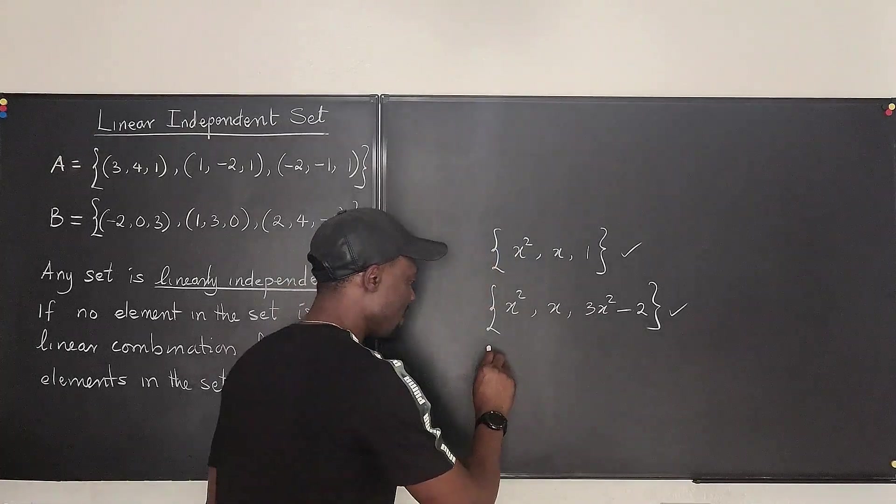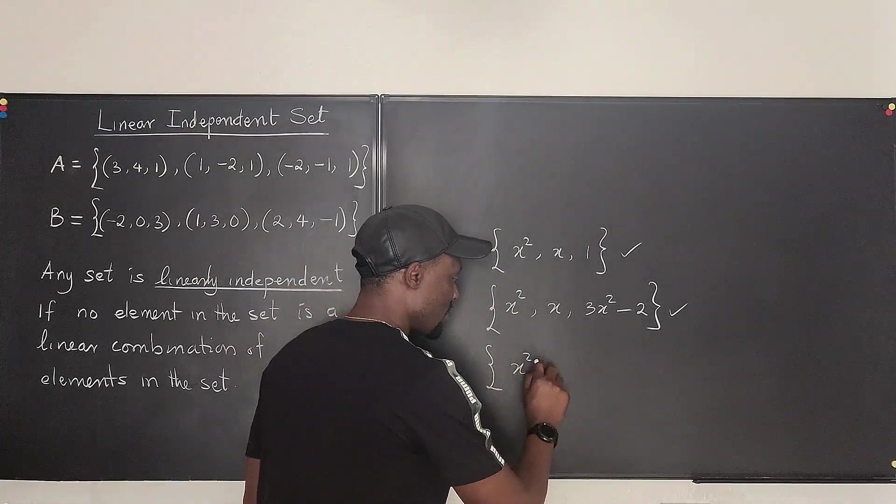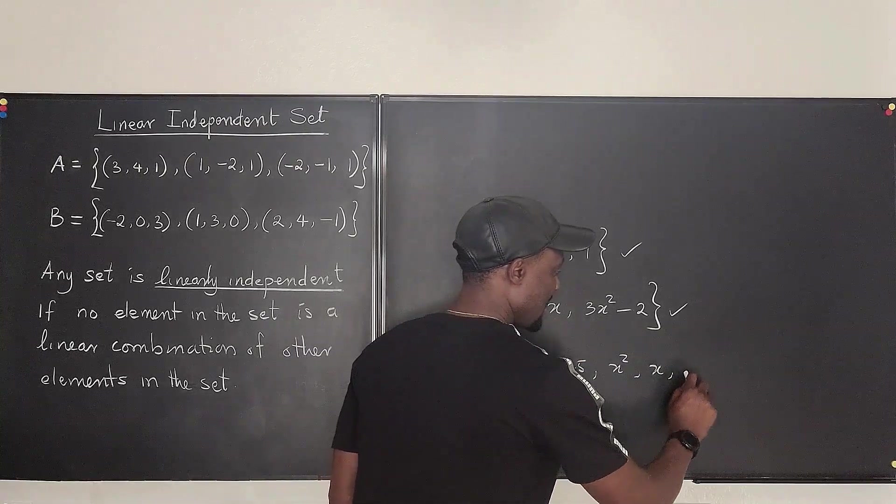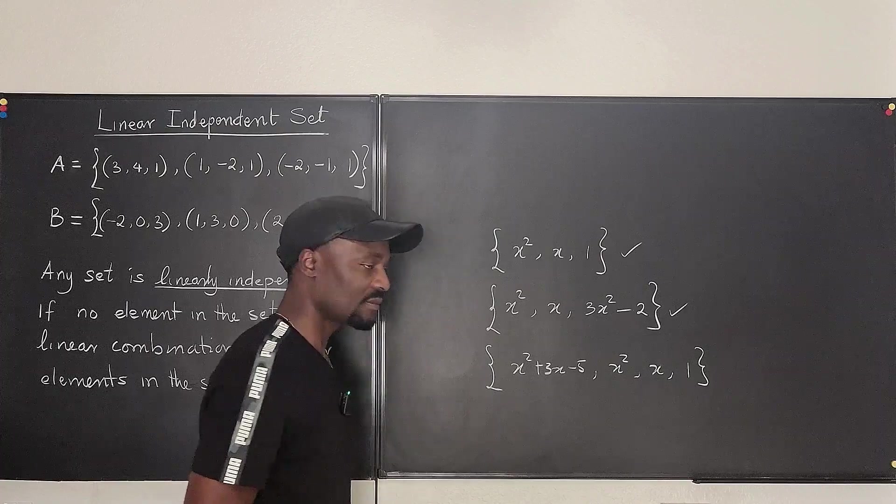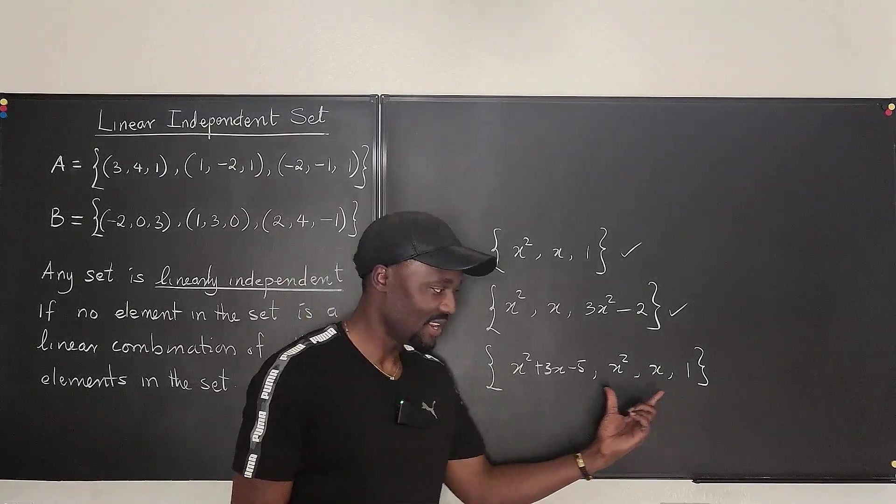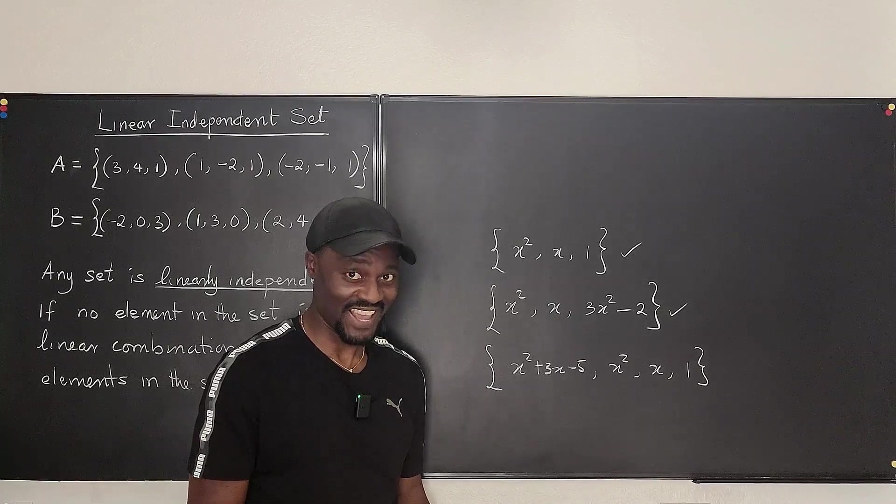What if I gave you x squared plus 3x minus 5? I gave you x squared, I gave you x, and I gave you 1. Do you think there can be a conspiracy among these three to get rid of this guy? Yes.